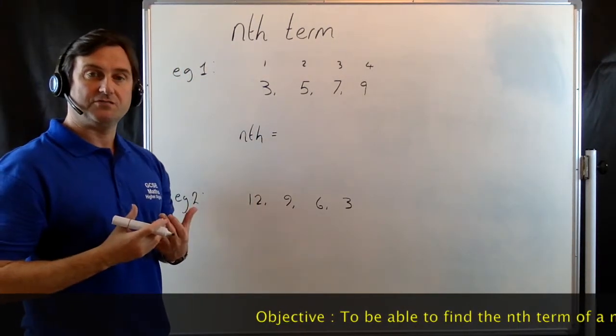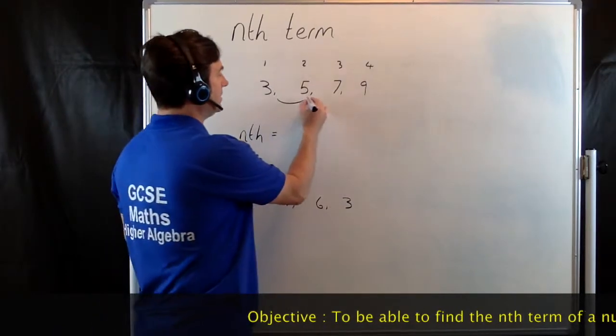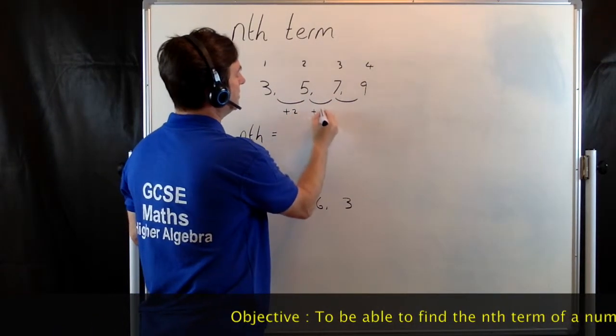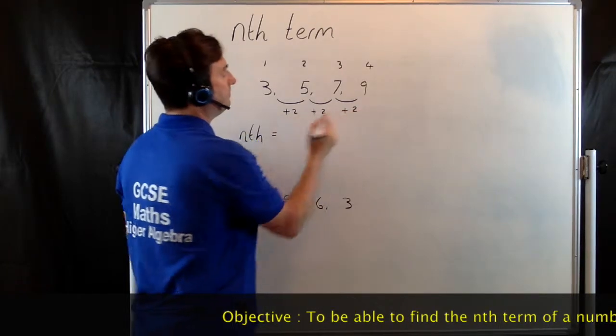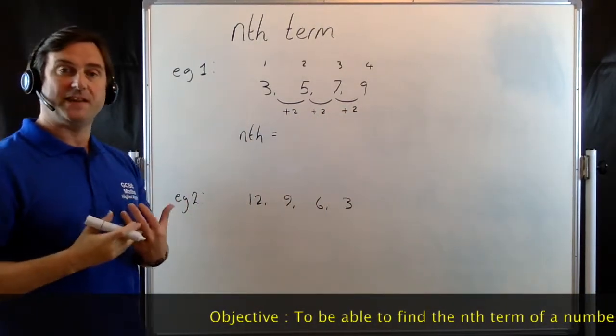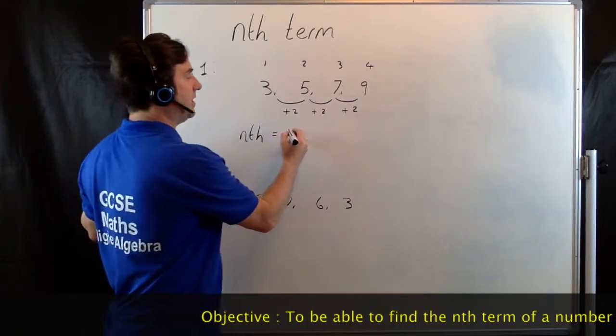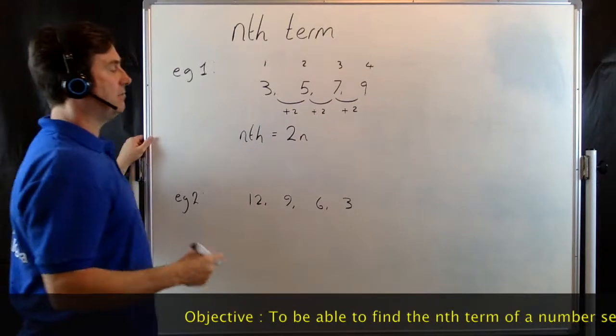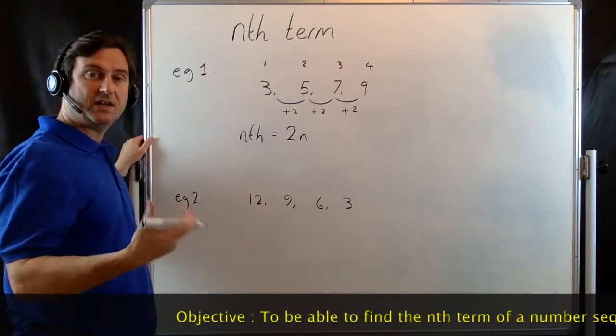And we work out what the difference is. If we have a look at this, this is going up by 2 each time. Whatever it's going up in, we write that as multiplying it by n. So we write 2n. If that was going up by 3, it would be 3n and so on.